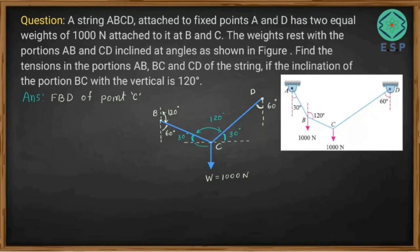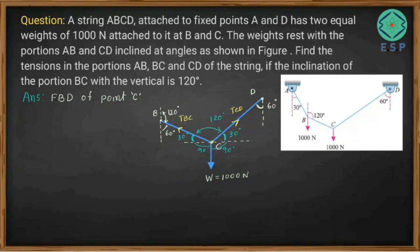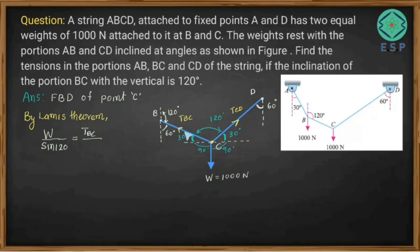The angles work out to 90 degrees on each side as well. We can now apply Lami's theorem at point C to find tension in CD and tension in BC. By Lami's theorem: W divided by sine of the angle opposite to it equals T_BC divided by sine of its opposite angle. The angle opposite to W is 120 degrees, and opposite to T_BC is 90 plus 30, which is also 120 degrees.